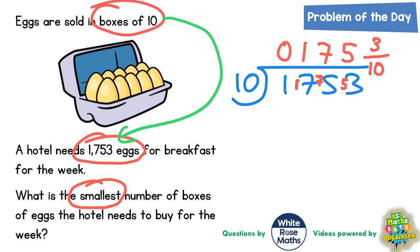Now what we need to do is interpret what this actually means. The 175 is 175 full boxes of eggs, and the 3 tenths is 3 tenths of a box. So that's not a full box, in other words.